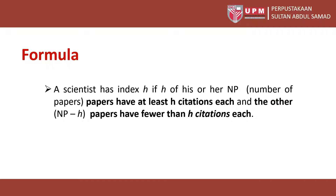Formula. A scientist has index H if H of his or her NP (number of papers) papers have at least H citations each, and the other NP minus H papers have fewer than H citations each.